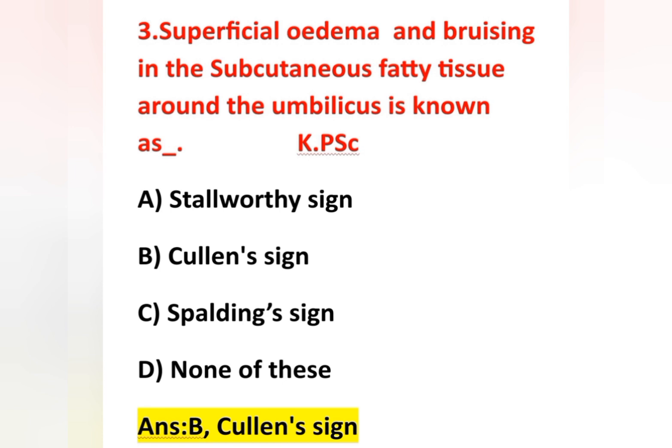Cullen's sign is the correct answer — superficial edema and bruising in the subcutaneous fatty tissue around the umbilicus is a sign of acute pancreatitis. Stollworthy sign is mainly seen in placenta previa, and Spalding sign is usually seen in intrauterine death.